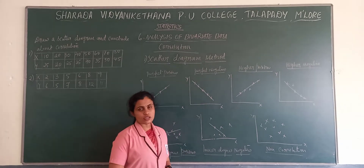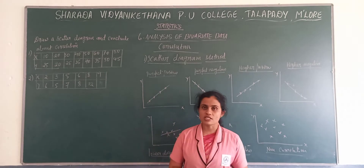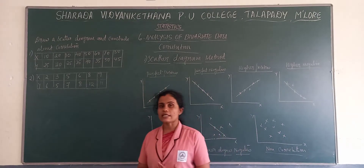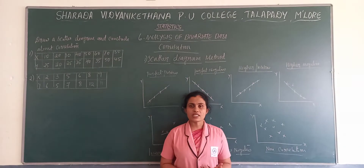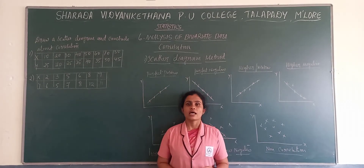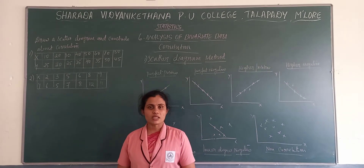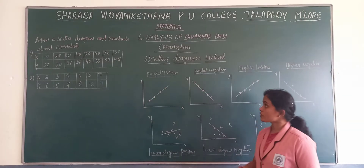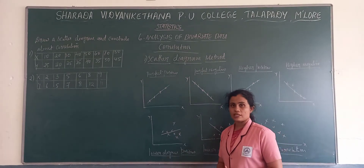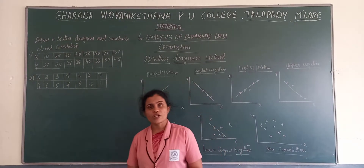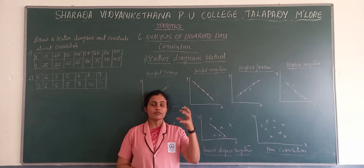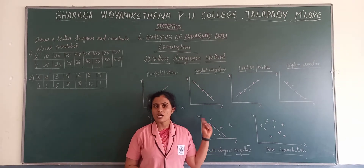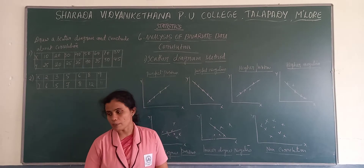We have also seen that there are three measures to measure the correlation. Those measures are: scatter diagram method, Karl Pearson's coefficient of correlation, and Spearman's rank correlation. Today we discuss about the first method, that is the scatter diagram method. It is a method of measuring correlation. When we are measuring correlation, there are three kinds of methods, and the first one is the scatter diagram method.